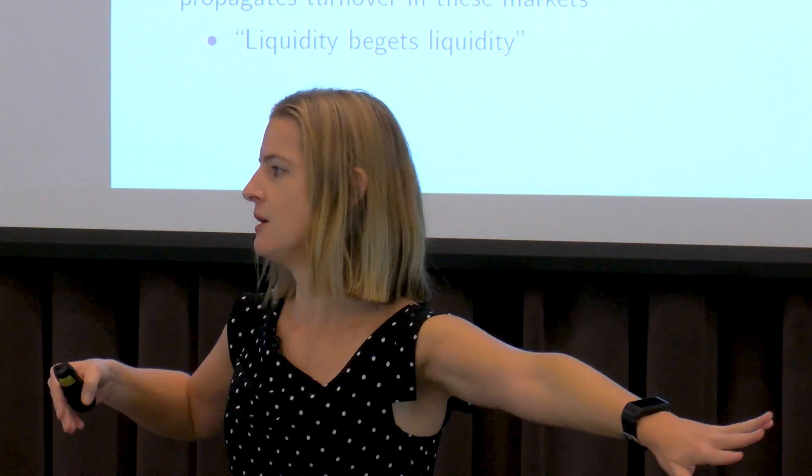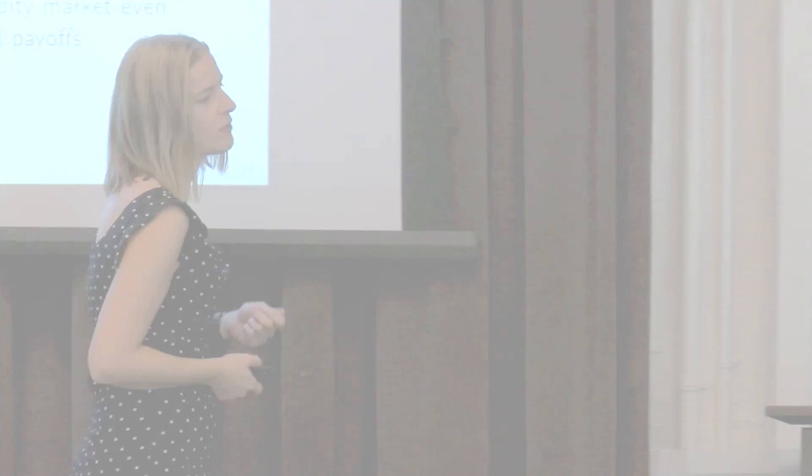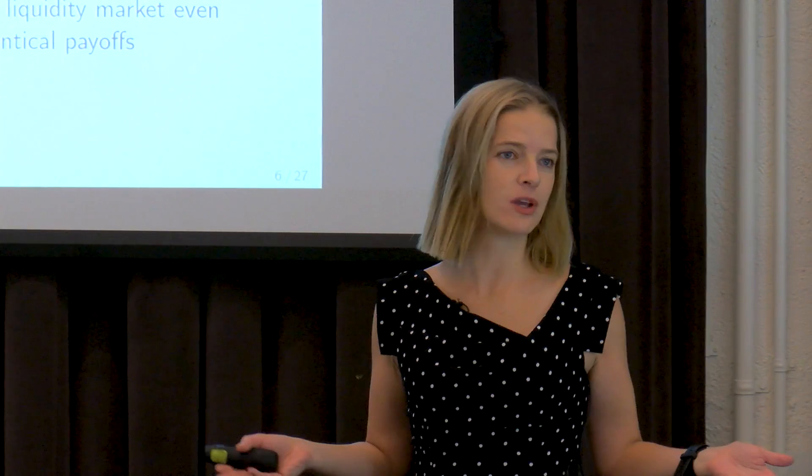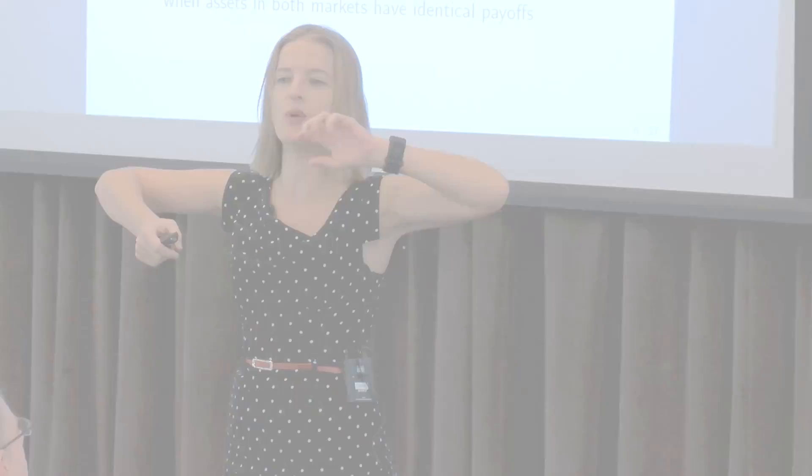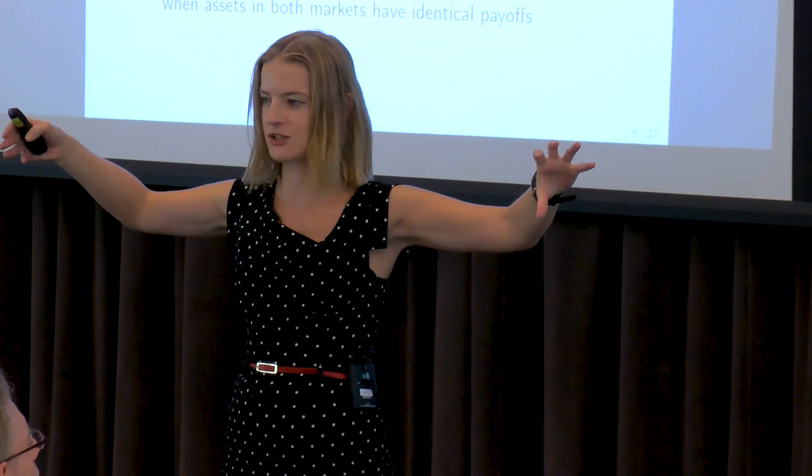I'm going to use a model where you have market segmentation by liquidity preferences. There's this Vianos and Wang paper from the Journal of Economic Theory back in 2007. I'm just going to calibrate that to commercial real estate markets to see does this explain some of the data. You have heterogeneity in investors liquidity preferences, so they're going to vary in how frequently they get a shock that makes them want to trade.